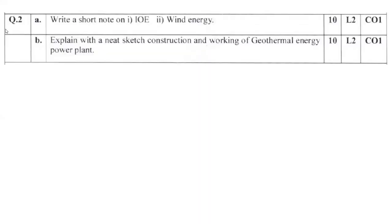Question 2: write a short note on IOE and wind energy, 5 plus 5 equals 10 marks. Explain with neat sketch of wind energy. Wind energy is a renewable energy source where you convert wind energy into useful energy in the form of electricity using a wind energy conversion system. Explain with neat sketch construction and working of geothermal power plant. Explain with a schematic diagram how geothermal energy is used and how you operate the turbine generator set.